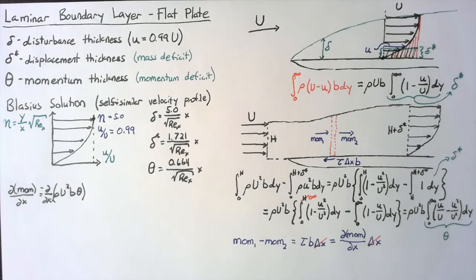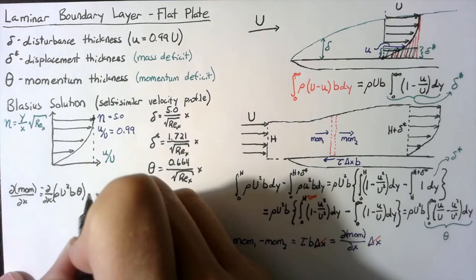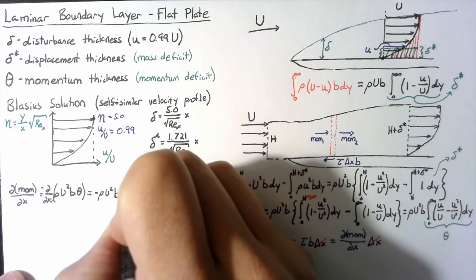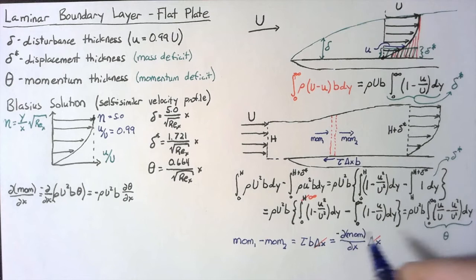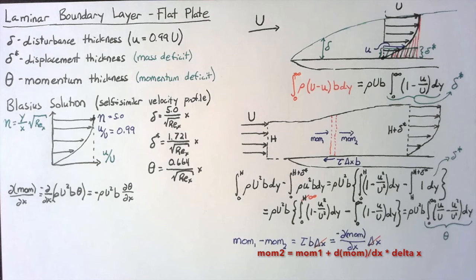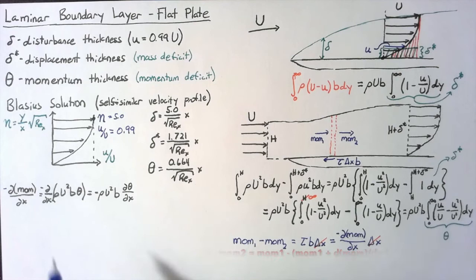Now most of these are constants that we can just take out. So this is going to be equal to negative rho U² b, multiplied by dθ/dx. Now I've made a sign error in my definition down here — I actually need a negative. The momentum of phase 2 is equal to momentum of phase 1 plus the change in momentum times delta x, so that ends up being a negative. The momentum 1 cancels out, so we need a negative here, which ends up giving us a positive result.